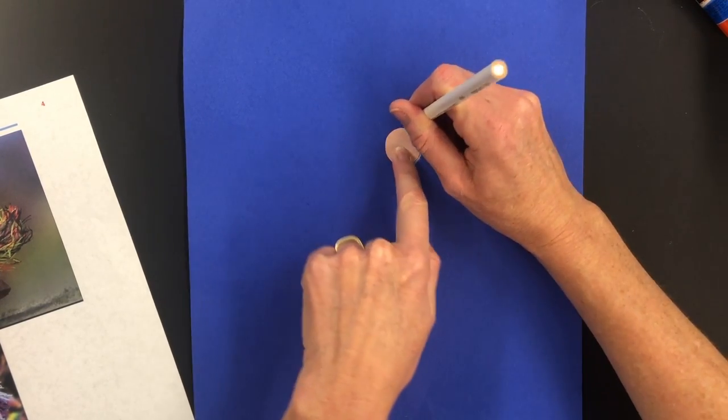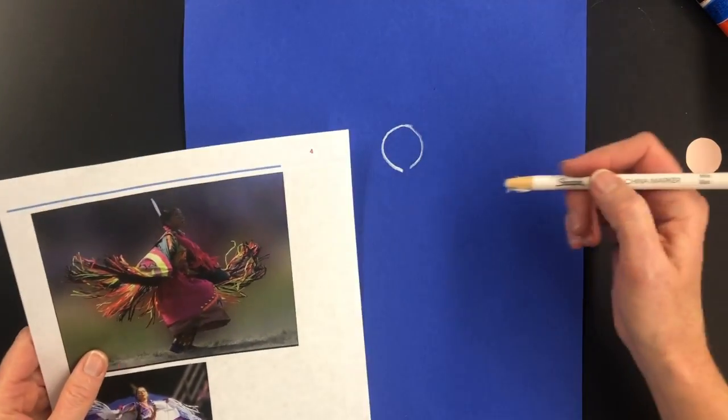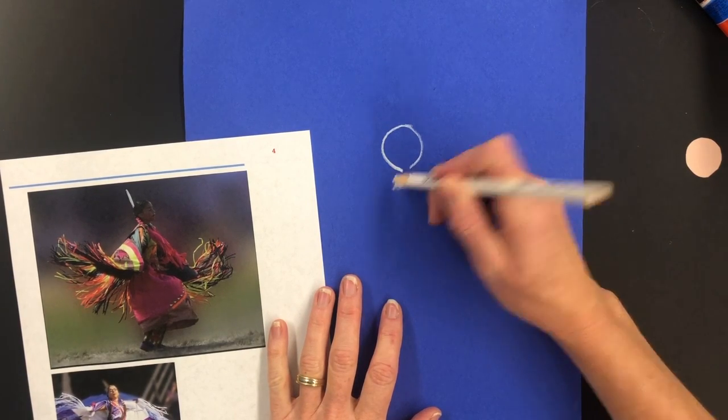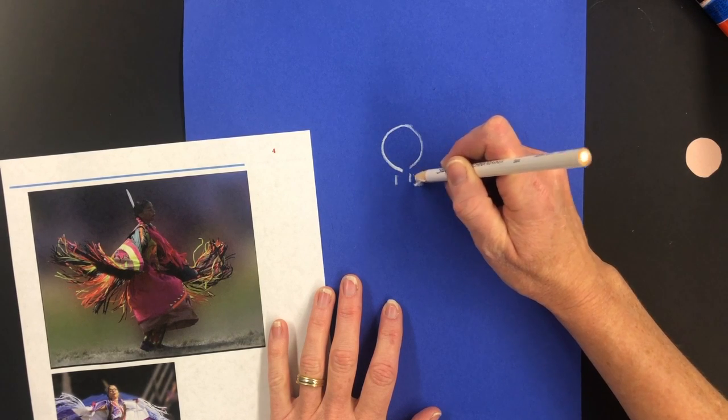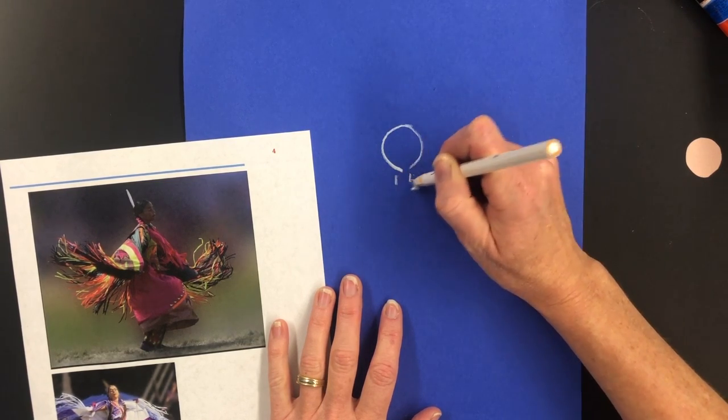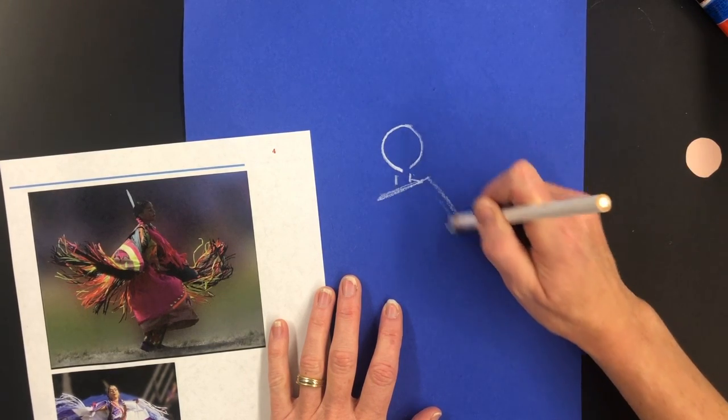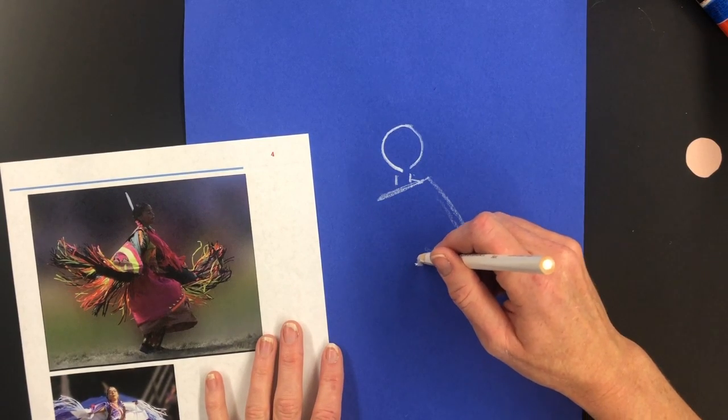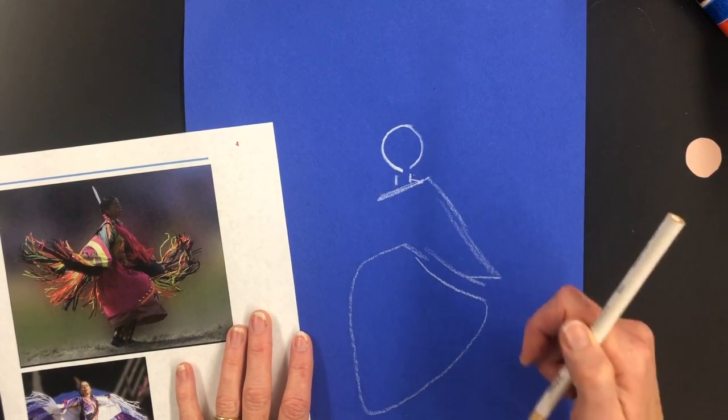I'm going to use that to start. And then from there, I'm going to just sketch out a little bit of a neck. Here are the shoulders. Shoulders are kind of like this. And one arm is coming down like this. I'm just looking at shapes, which is like a big wide triangle.